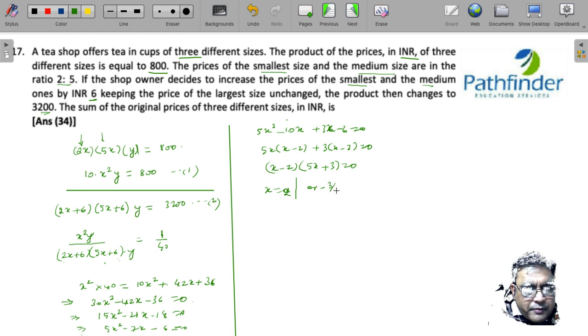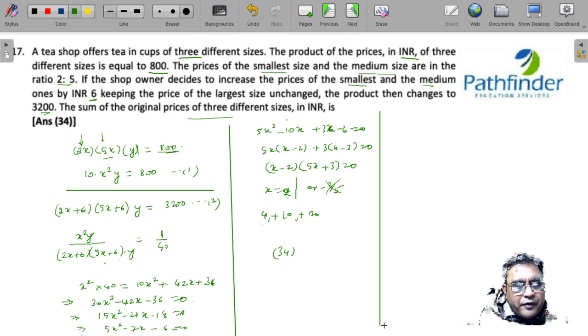We can ignore the negative value of x. So now we have the three prices: 2x, 5x. 2x is 4, 5x is 10, so obviously the remaining price, because the product is 800, 4 into 10 is 40, the third price must be 20. We have been asked what is the sum of the three original prices, so you can just add 4 + 10 + 20 as 34. Now this is one way to view it.